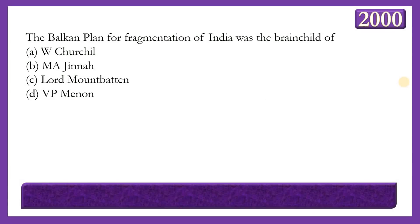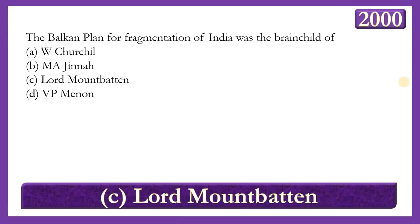Next question: The Balkan Plan for fragmentation of India was the brainchild of whom? Options: W. Churchill, M.A. Jinnah, Lord Mountbatten, or V.P. Menon. The answer is option C — Lord Mountbatten. He was authorized by the British government to resolve the situation in India. Mountbatten concluded that transfer of power from one central representative constituent assembly would be impossible, as neither the Indian National Congress nor the Muslim League could agree on terms.